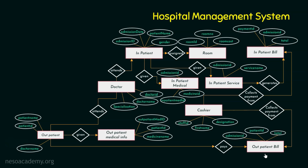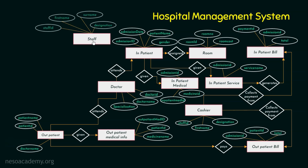So far we have seen doctors, inpatient, outpatient, and cashier. Are we forgetting one important entity — the staff? The staff entity is described by attributes staff ID, first name, surname, and designation. Staff are assigned for both inpatient and outpatient, just like doctors. Staff are registered with inpatient as well as with outpatient. Here I am maintaining a one-to-one relationship, though this is all requirements-based.